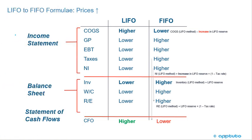We've seen this chart now a couple of times. This is the conversion of LIFO to FIFO when prices are rising. Under FIFO with rising prices, you have lower cost of goods sold. Here's the formula you need to adjust cost of goods sold. If we have lower cost of goods sold, we have higher net income.